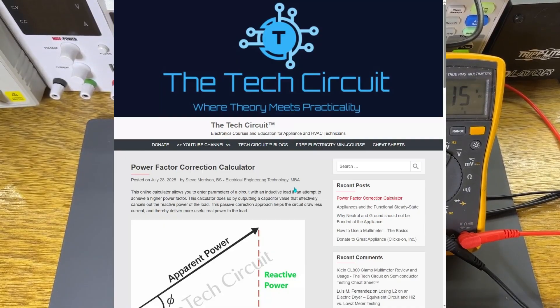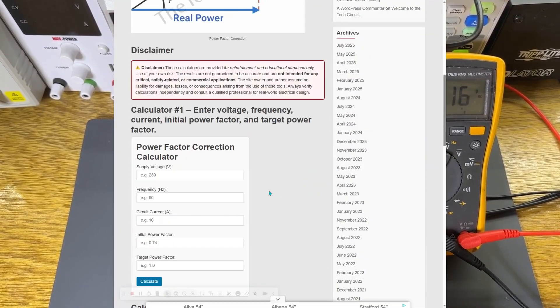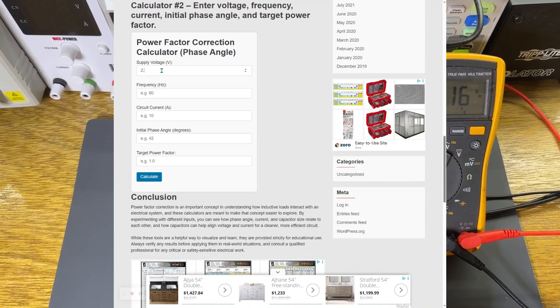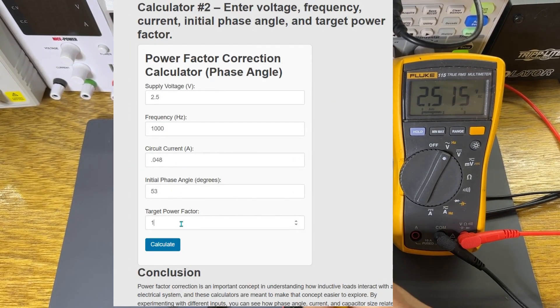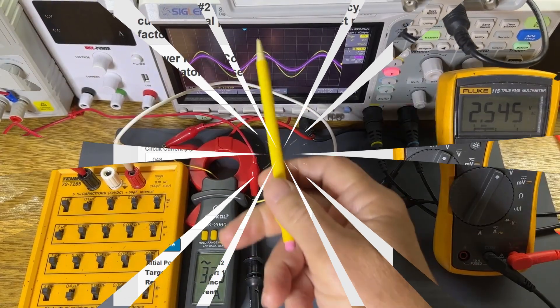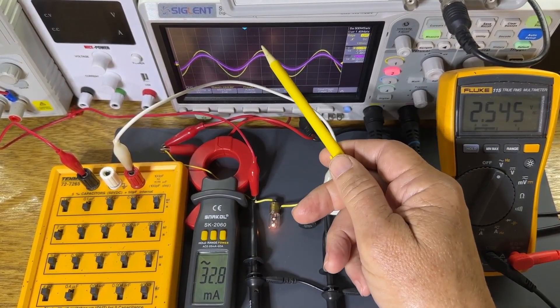I'll then plug our phase difference into this power factor correction calculator, which will calculate the capacitance needed to correct the problem and then add that capacitance across the load. You'll then see how this snaps current and voltage back into phase and solves the problem.